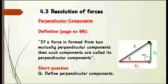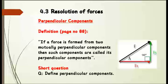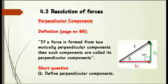What are perpendicular components? Perpendicular components are the components which make an angle of 90 degrees between them. You can see in the figure that the x-axis and y-axis are perpendicular components because they make a 90-degree angle. By definition, if a force is formed from two mutually perpendicular components, such components are called perpendicular components. This is also a short question — define perpendicular components.